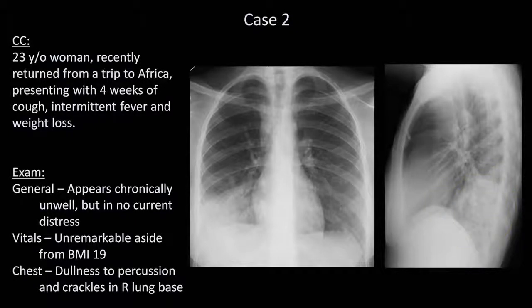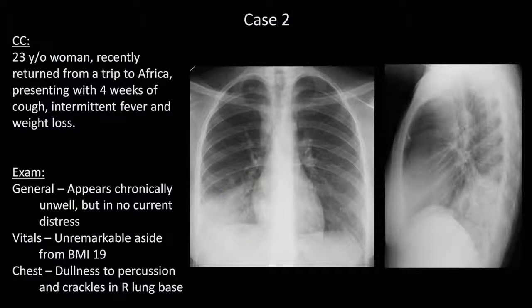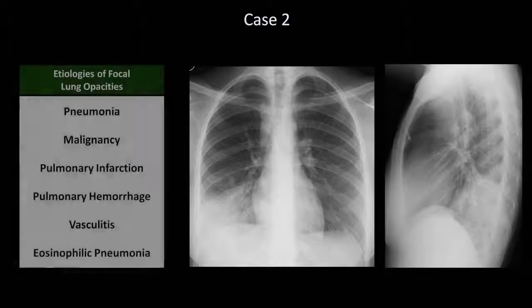This is a great example of the spine sign, in which there is an interruption in the normal progression to increasing lucency as one moves inferiorly down the spine on the lateral film. In addition, this opacity is well-defined and dense enough to be referred to as a consolidation. On the PA film, if you examine this area more closely, I think you may be able to make out an air bronchogram. What is the etiology of this focal lung opacity? Let's take a look at the etiologies of focal lung opacities from Lesson 8.